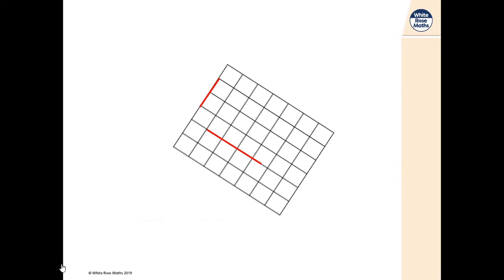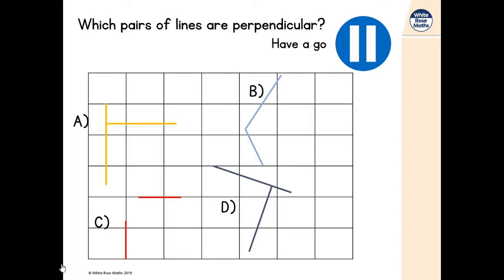Are those two diagonal lines perpendicular? The grid might make you think they can't be because they're diagonal, but that does not matter. Imagine them both carrying on — they would meet at a right angle, so those two lines are perpendicular to each other. Now which of these sets of lines are perpendicular? Pair A: definitely perpendicular. Pair B: they do meet but at more than a right angle, so no. Pair C: not meeting, but imagined meeting would be at a right angle — yes. Pair D: diagonal but still perpendicular to each other.